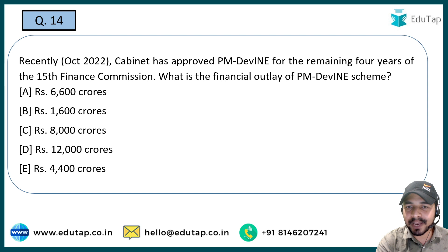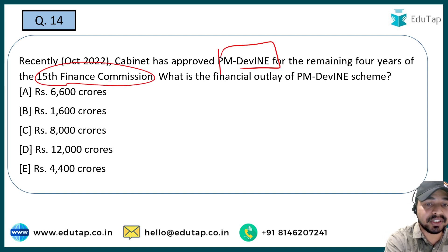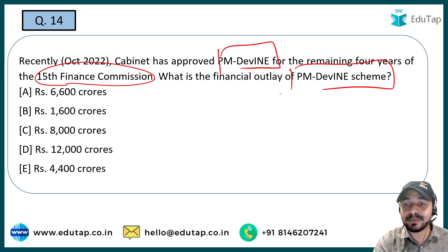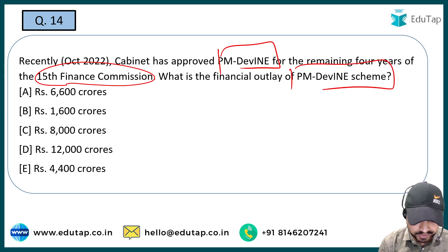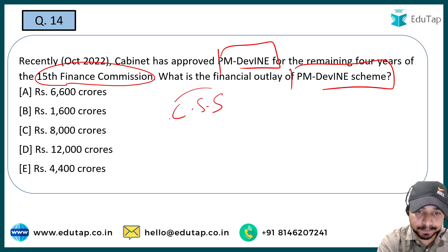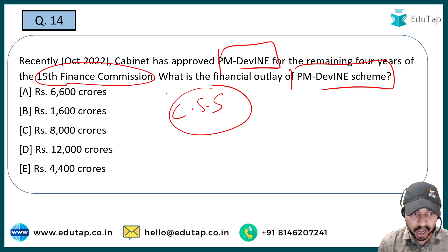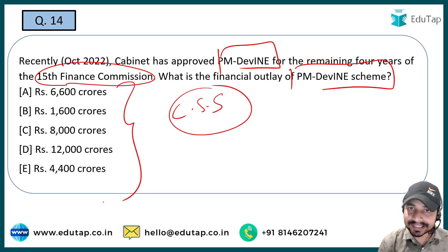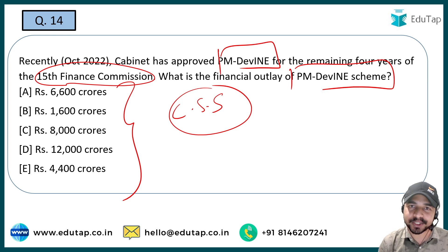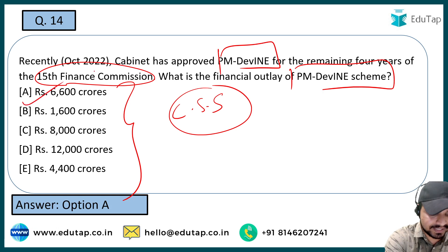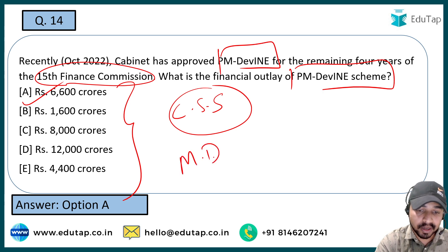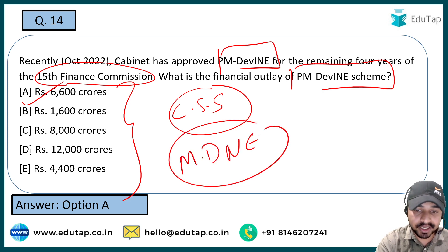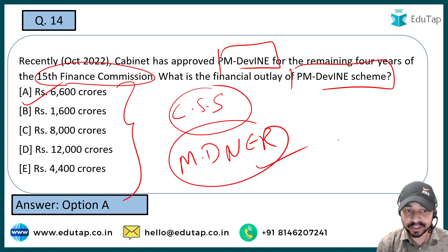The next question: the cabinet recently approved PM DIVINE for the remaining four years of the 15th Finance Commission. What is the financial outlay of the PM DIVINE scheme? This is a central sector scheme. The right answer is Option A — ₹6,600 crores. It is being implemented by the Ministry of Development of North East Region.